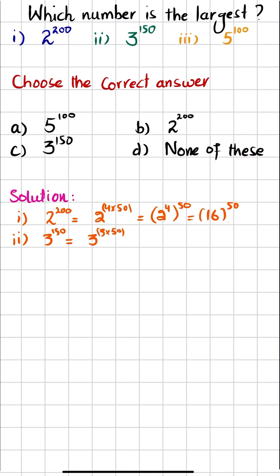And again, if you write it, it can be written as 3 power 3 multiply by 50, that will yield you 3, 3s are 9 and 9, 3s are 27. So 27 power 50.